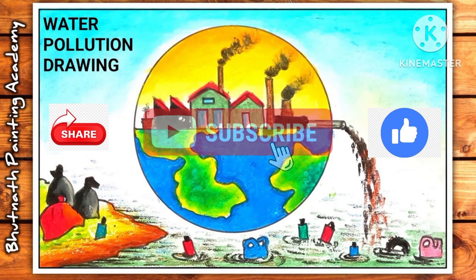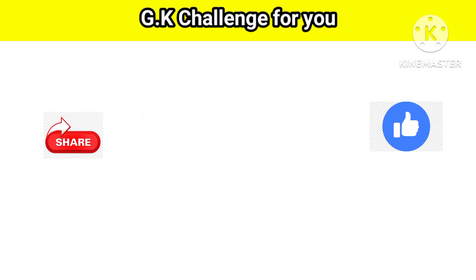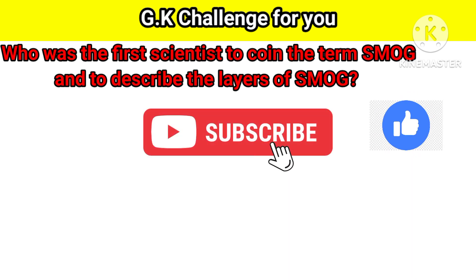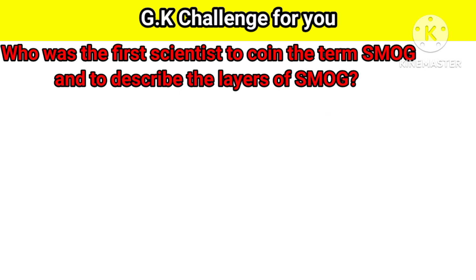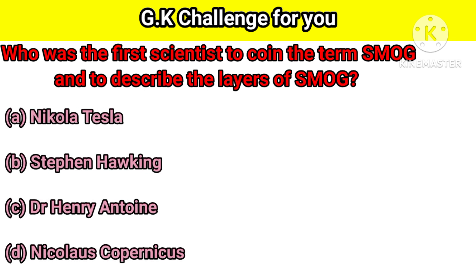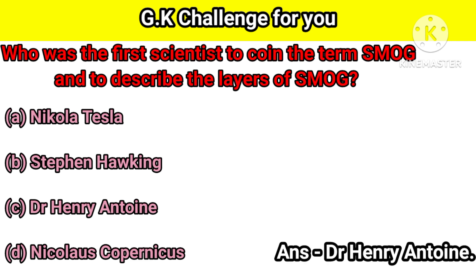Let's start the quiz. Question number 1: Who was the first scientist to coin the term 'smog' and to describe the layers of smog? Option A: Nikola Tesla, B: Stephen Hawking, C: Dr. Henry Antony, D: Nicholas Capronikas. Your right answer is Dr. Henry Antony.